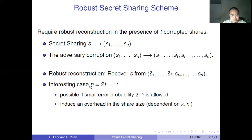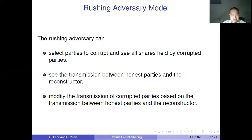The interesting case is N equals 2T plus 1 — the threshold case. There exists a robust secret sharing scheme if we allow some small error probability. We are interested in the overhead and want the overhead to be as small as possible. In this work, we consider the Russian adversary model.